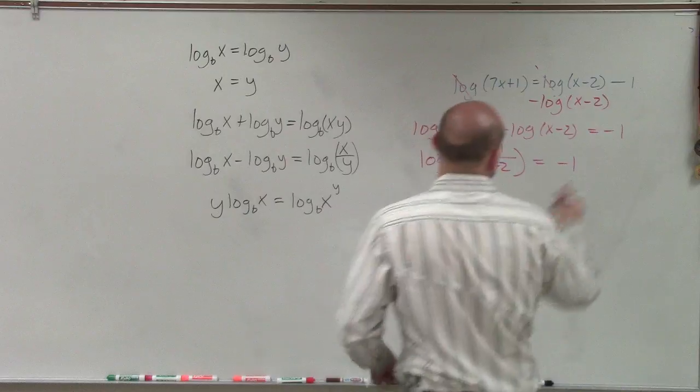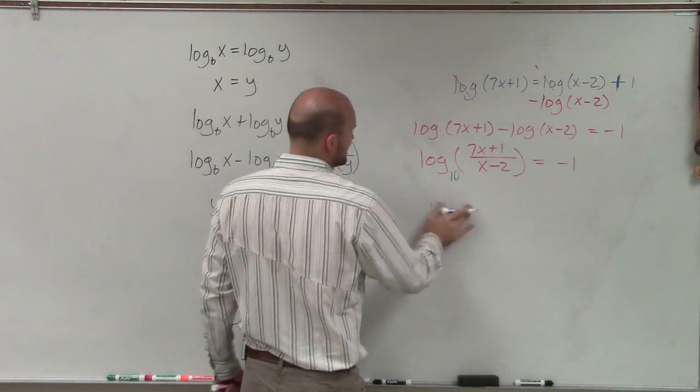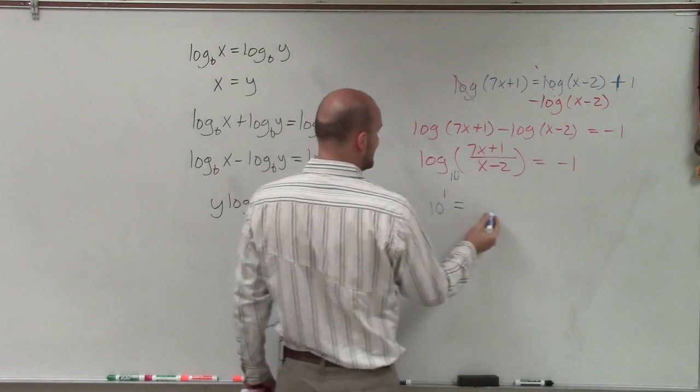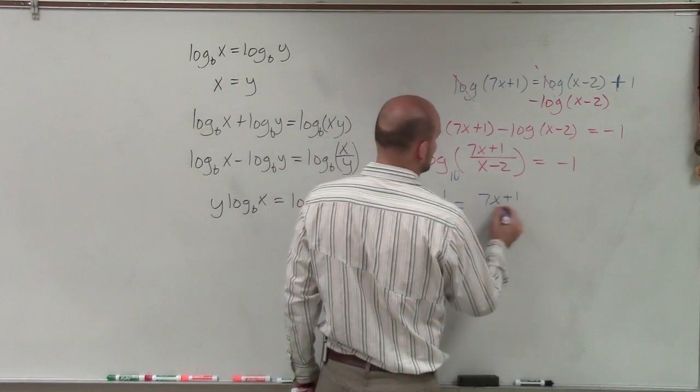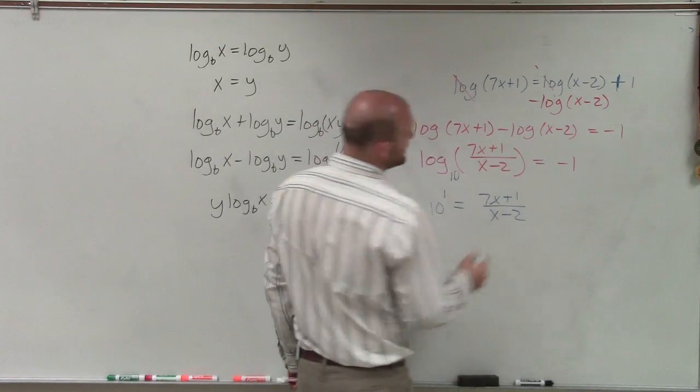Oh, I rewrote that wrong. That's a positive 1. Sorry about that. So that's going to be 10 to the first power equals 7x plus 1 divided by x minus 2. I thought that might be a little different. I mean, you still could be able to solve it, it's just going to be a lot more work.